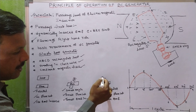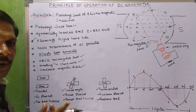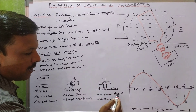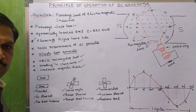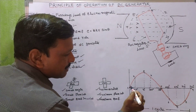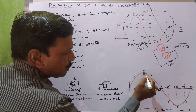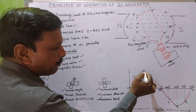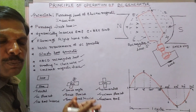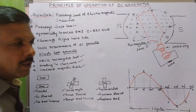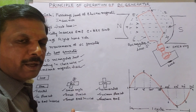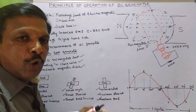At position number three, the flux and loop are both perpendicular. When both are perpendicular, maximum flux cutting takes place and maximum EMF is induced. At position number four, again small flux cut and small EMF is induced. At position number five, which is opposite to position one, again no flux cut and no EMF is induced.